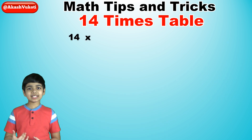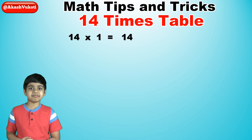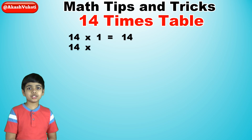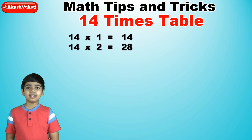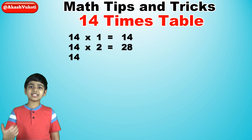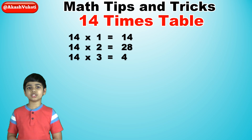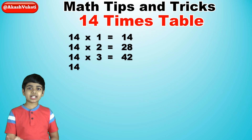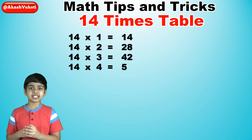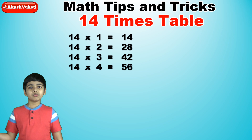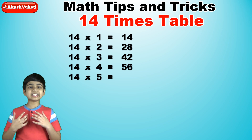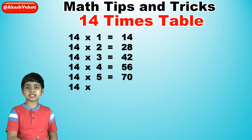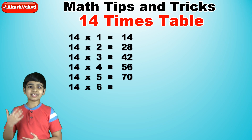14 times 1 is 14, 14 times 2 is 28, 14 times 3 is 42, 14 times 4 is 56, 14 times 5 is 70, 14 times 6 is 84.